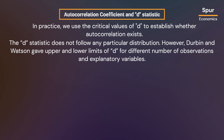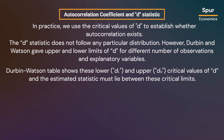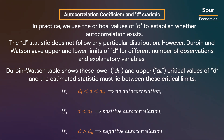In practice, we use the critical values of d to establish whether autocorrelation exists. The d statistic does not follow any particular distribution; however, Durbin and Watson gave upper and lower limits of d for different numbers of observations and explanatory variables. The Durbin-Watson table shows these critical values, and the estimated statistic must lie between these critical limits. If the estimated d statistic lies between dL and dU, then there is no autocorrelation. If d is less than dL, we have positive autocorrelation. If d is greater than dU, we have negative autocorrelation in the residuals.